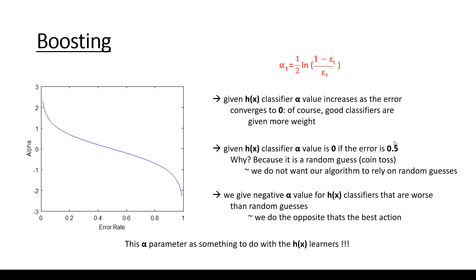If the error rate is 0.5, then the alpha value of that given weak classifier is 0. Why? Because it is a random guess — basically a coin flip. So if the error rate is 0.5, we don't want our algorithm to rely on random guesses. We are not going to bother with a classifier with error rate 0.5. We don't want to deal with random guesses.